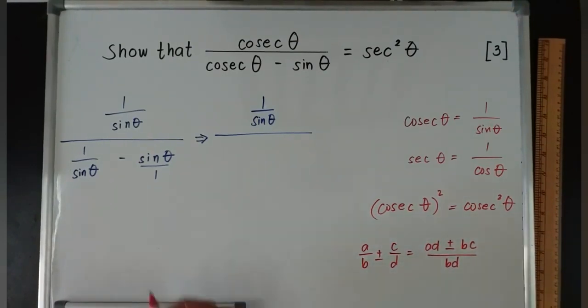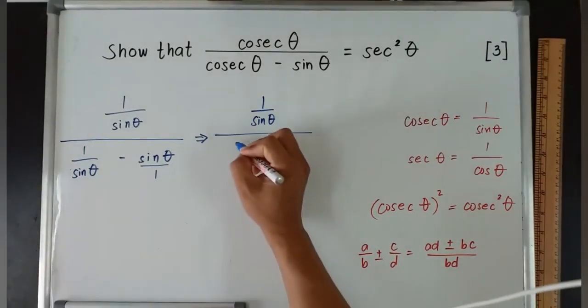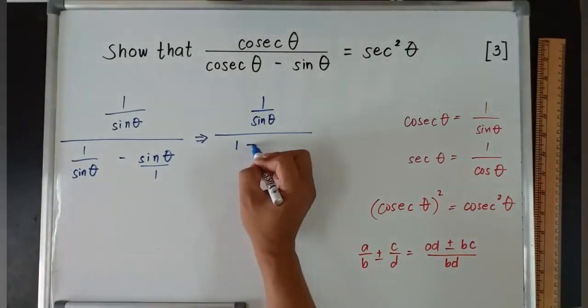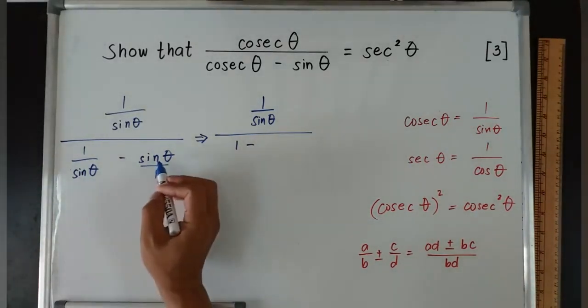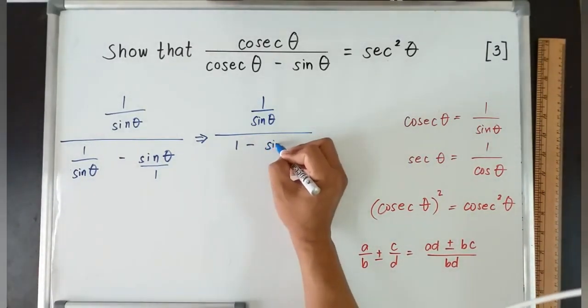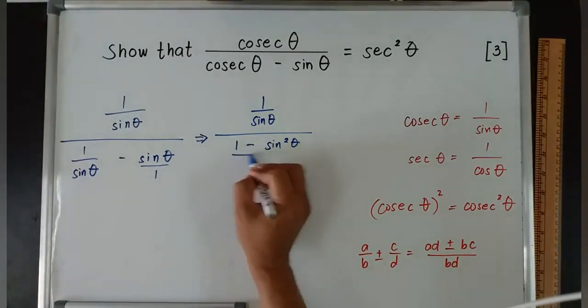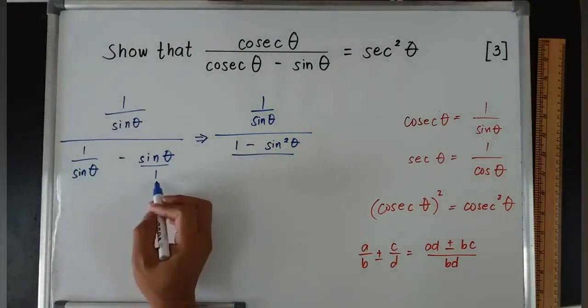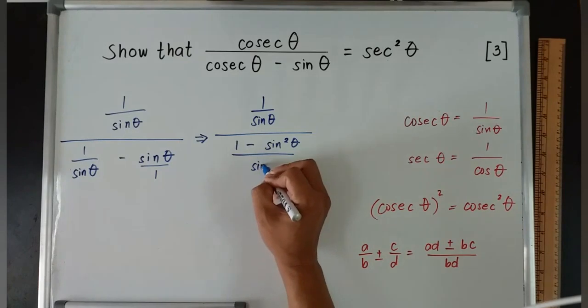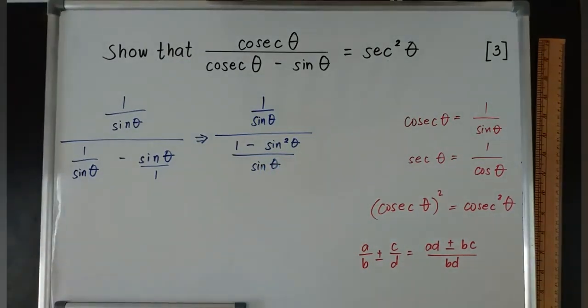So I can multiply: one times one is one. Since this is minus, I'll put minus. Sine times sine is sin² θ, over sine times one is sin θ.